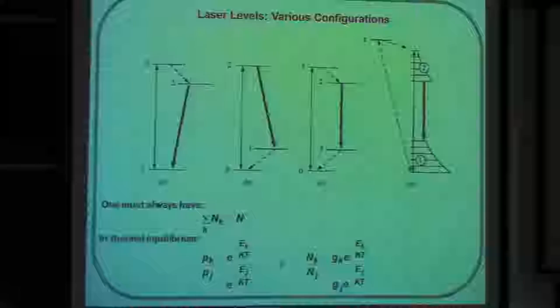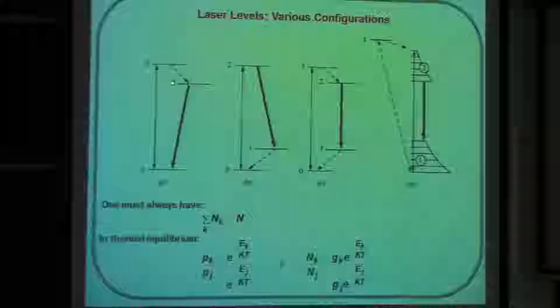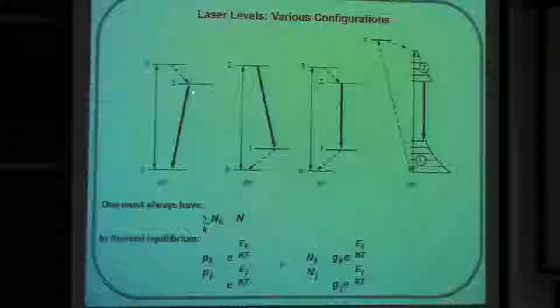Everything else is the non-lasing transitions. In this scheme, the atoms are sitting all in the ground state. You pump them by some means into the third state, and in that third state they quickly relax down to the second state. When they pile up in the second state, and if there are more in the second state than in the ground state, you get population inversion and therefore lasing.